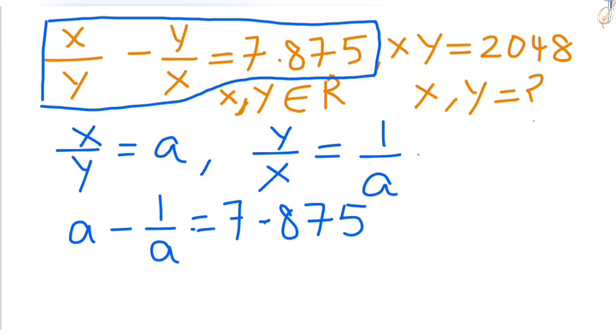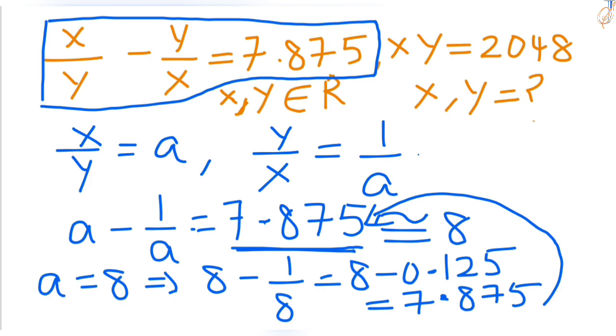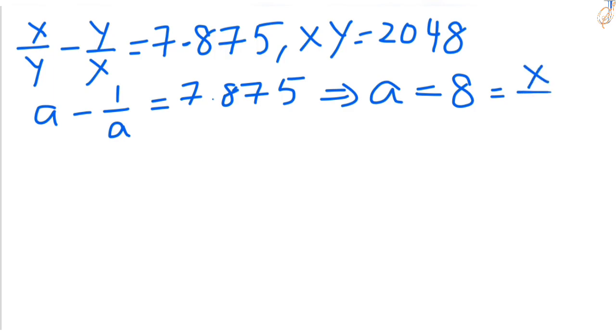Now how can you solve this? Observe this 7.875, which is nearly equal to 8. If we take a value equal to 8, then 8 minus 1 by 8 equals 8 minus 0.125. If you subtract, you get 7.875 which equals this value. So a equal to 8 is a correct solution and it corresponds to x by y.